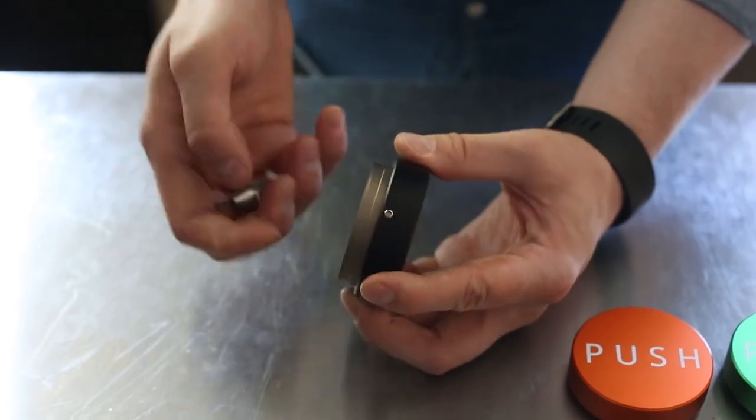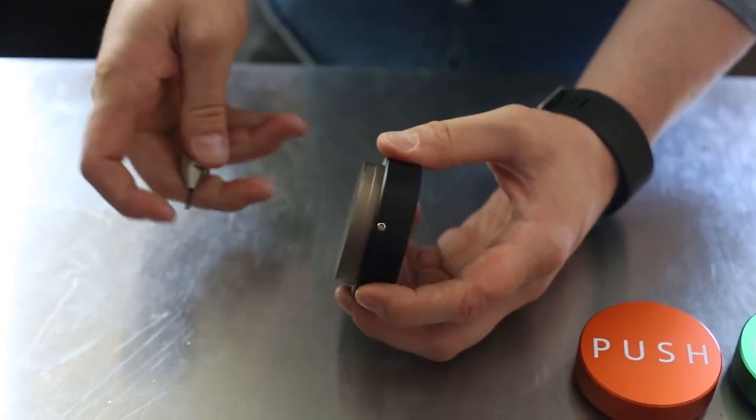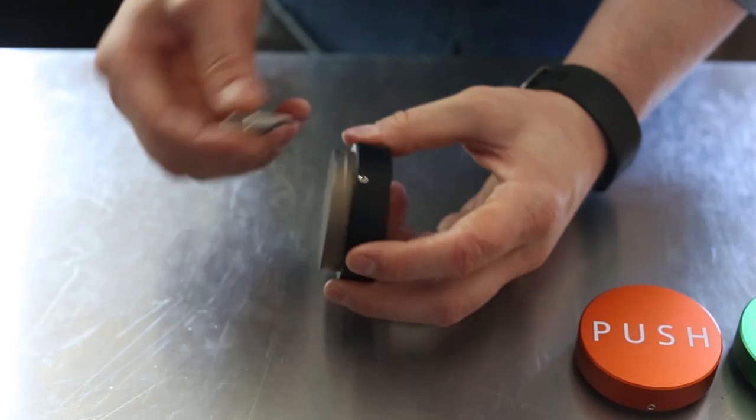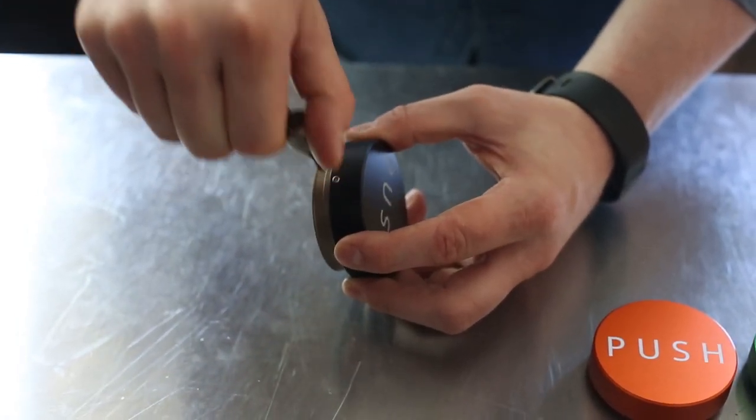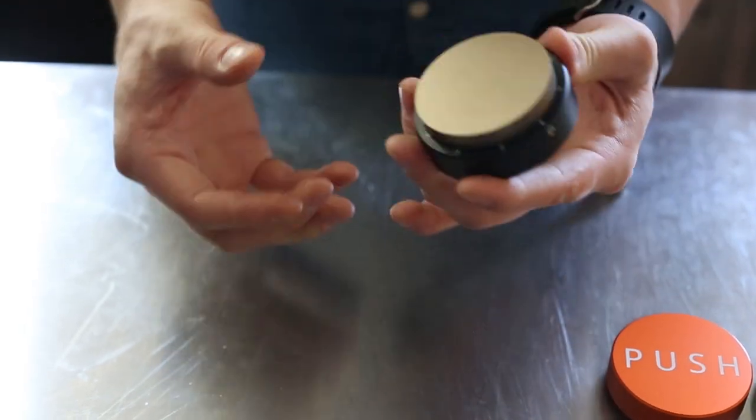To set a depth, you twist it to extend or retract it, then set the set screw using the tool and it's locked firmly in place.